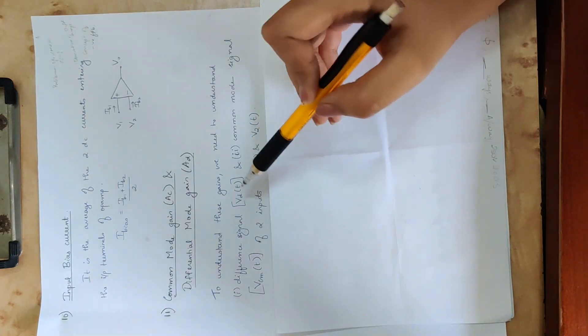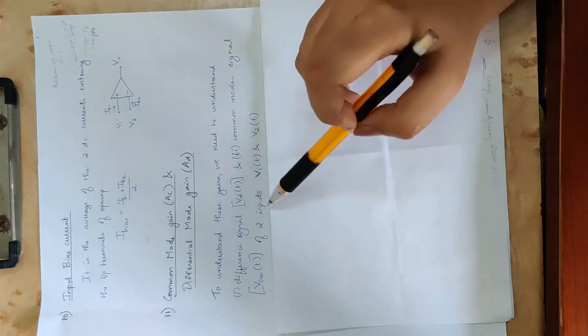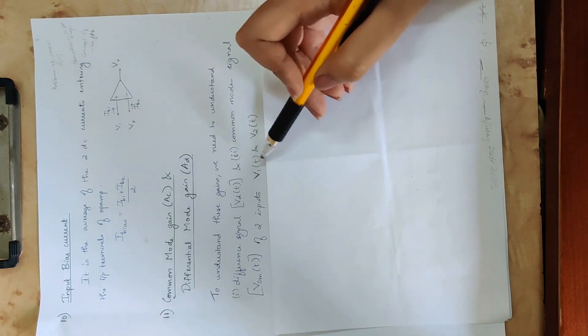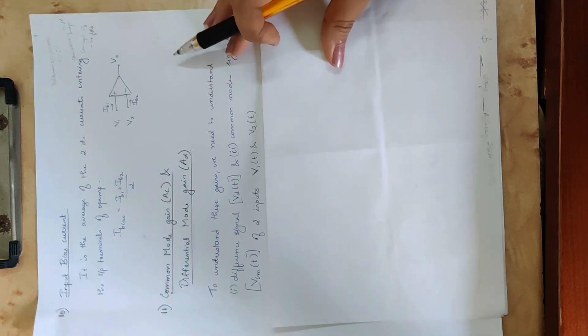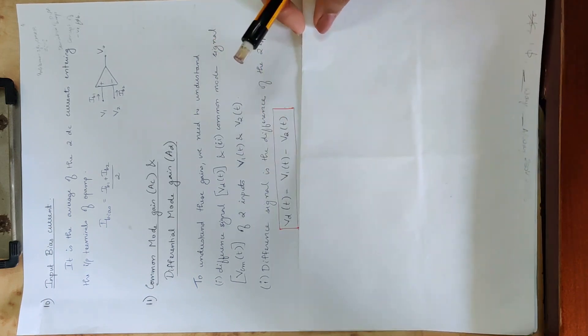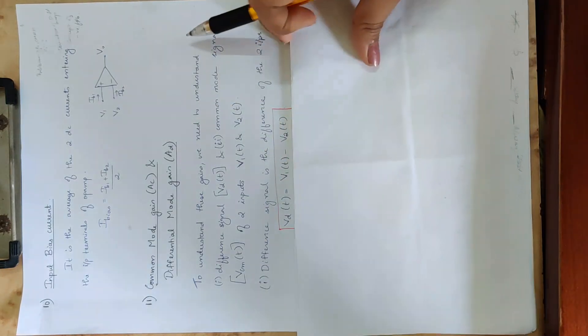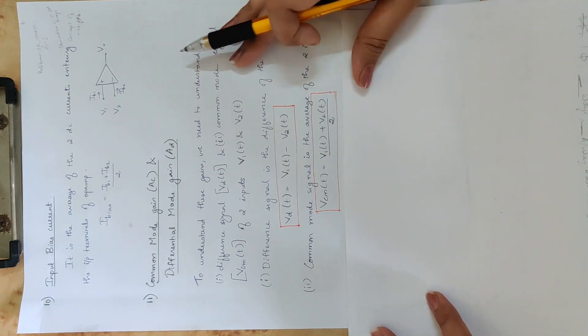We represent the difference signal as VD(t) and the common mode signal as VCM(t). Suppose we have two inputs V1 and V2, where V1 and V2 are time-dependent voltages. The difference signal VD(t) is the difference of the two inputs. The common mode signal VCM(t) is the average of the two inputs: VCM(t) = [V1(t) + V2(t)] / 2.